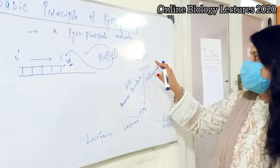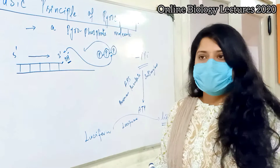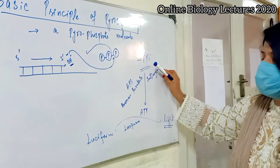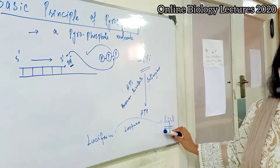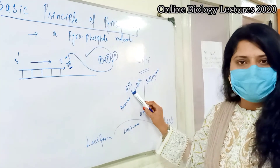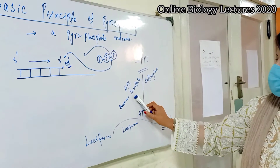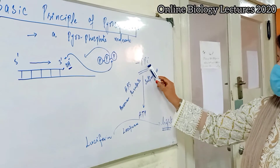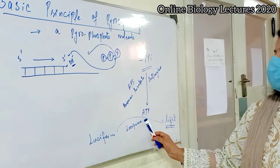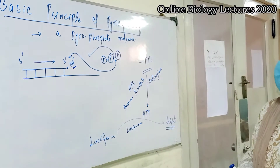The pyrophosphate can be converted into ATP because it is a high energy molecule. We add the chemical APS (adenosine 5'-phosphosulfate) and the enzyme sulfurase, which converts the pyrophosphate (PPi) into ATP. After that, the ATP converts luciferin into light in the presence of the luciferase enzyme.